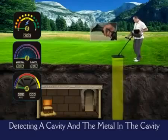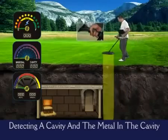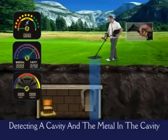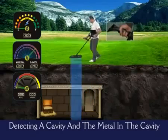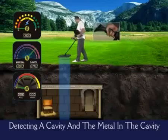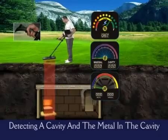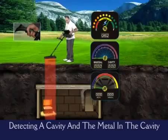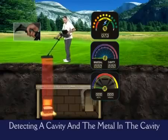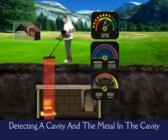When the user gets a cavity signal, the bar on the cavity indicator will rise according to the size of the cavity, and you will hear a different tone sound during detection. When the system detects the metal inside the cavity, the bar on the scope will move and notify the user that there's a metal inside the cavity.